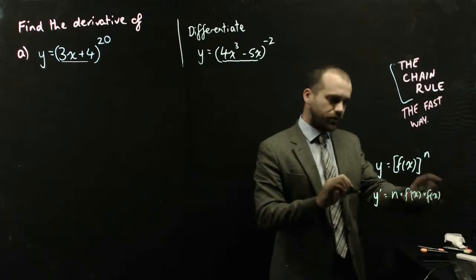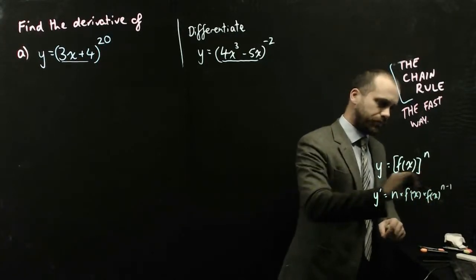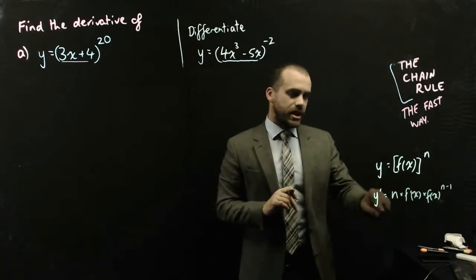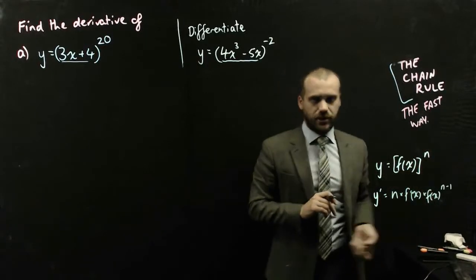And then we've got to raise f of x to the n minus 1. So y dash equals n times f dash of x times f of x to the power of n minus 1.